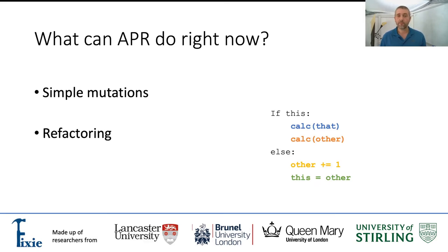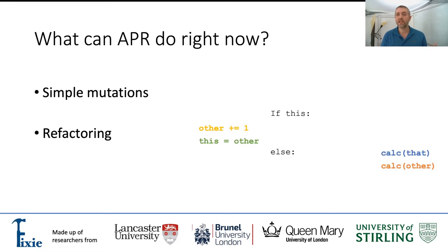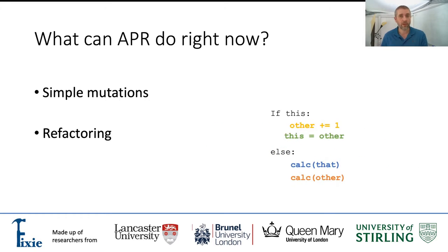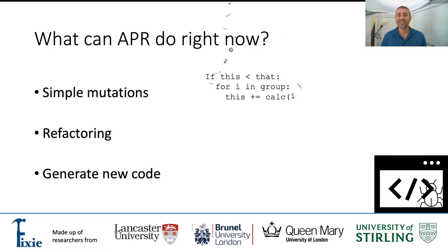Secondly, APR can utilize refactoring methods — everything from simple rearrangement of lines or short pieces of code to major reconstructing of the architecture of a whole system. Thirdly, and this is perhaps APR's least mature avenue, but in my opinion one of the most promising: the generating of new code.